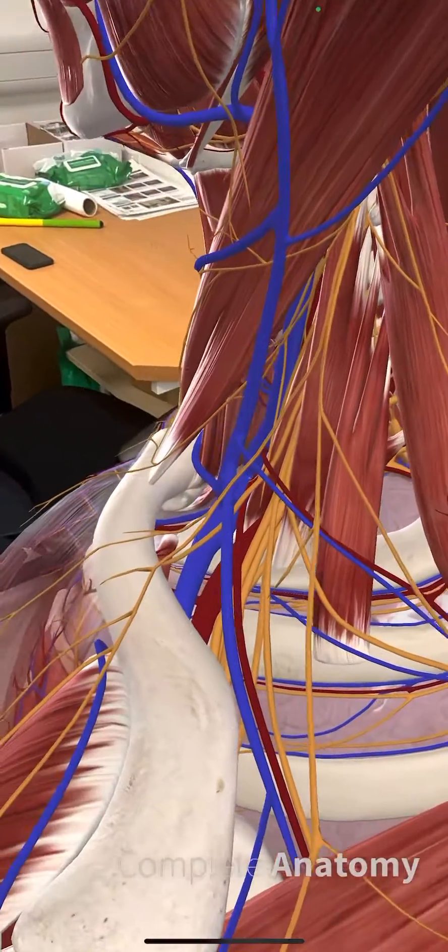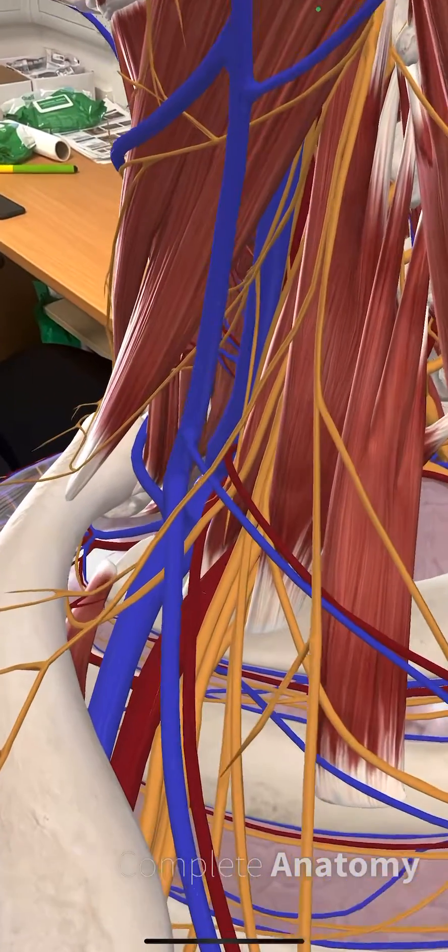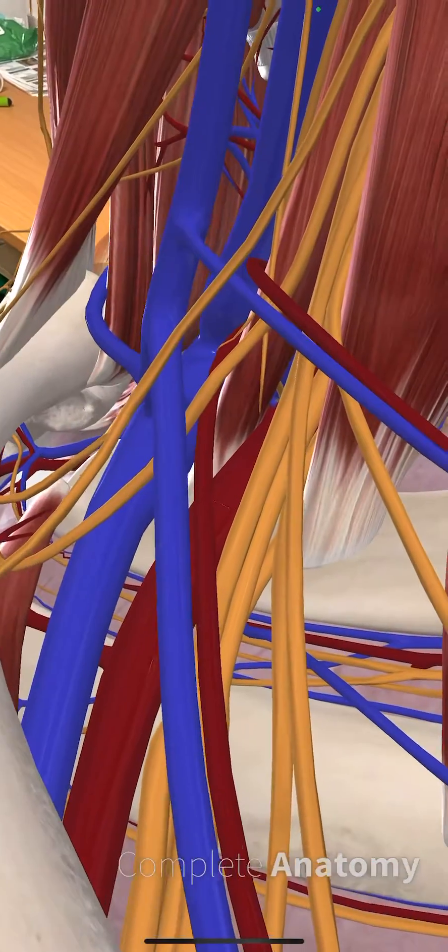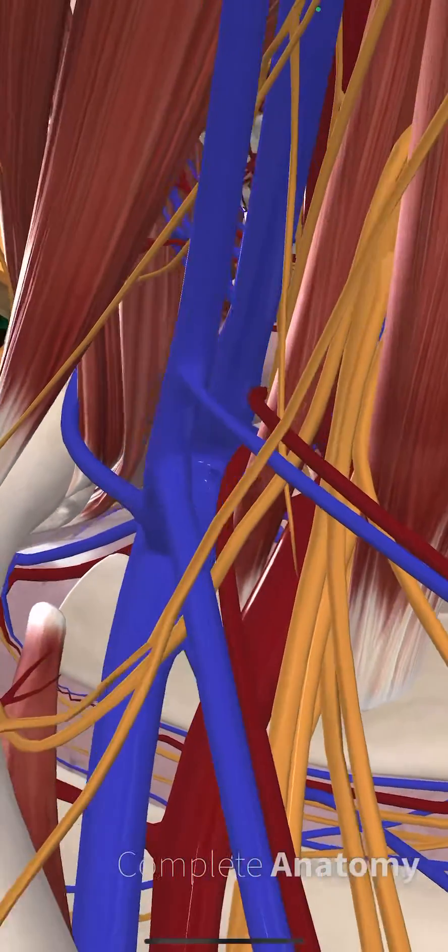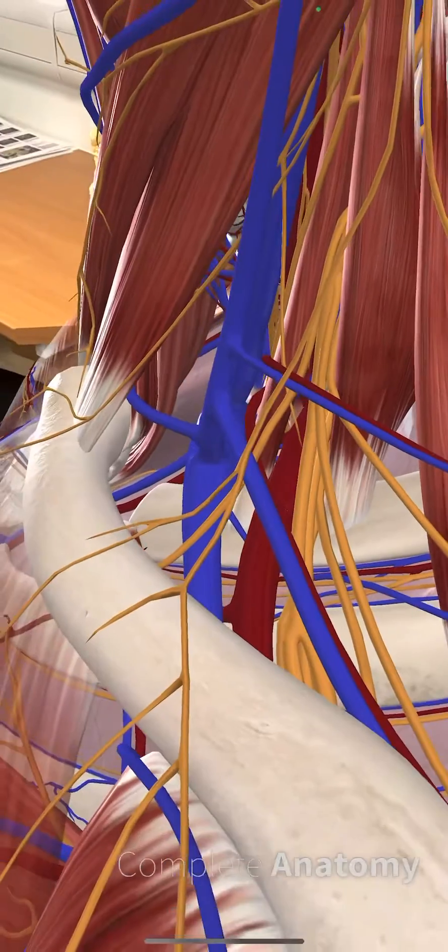But if we're coming in with our needle, we'll be approaching from this posterior aspect. As you come in here, you can see the divisions of the brachial plexus here in relation to the subclavian artery.